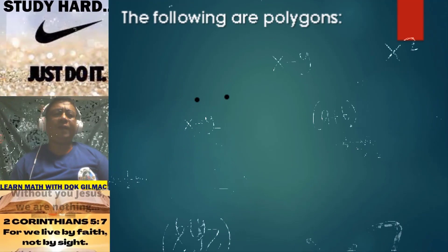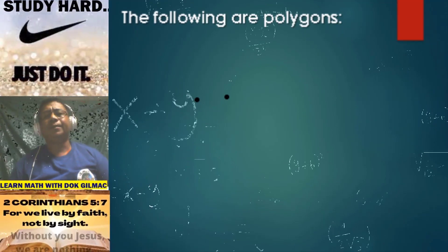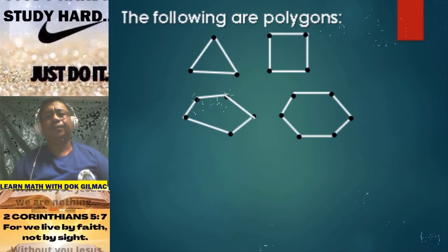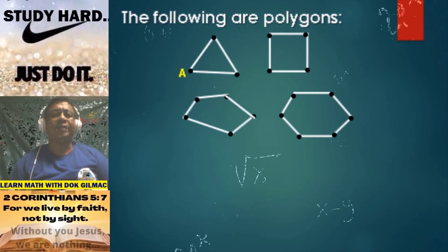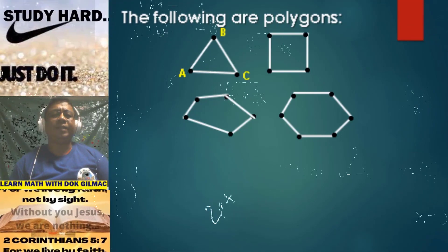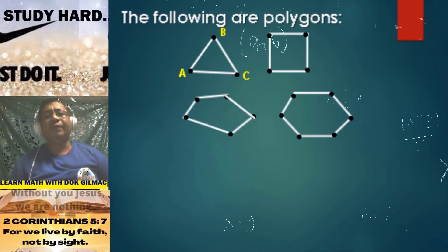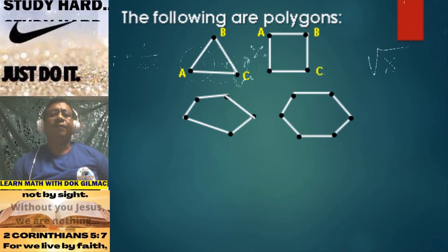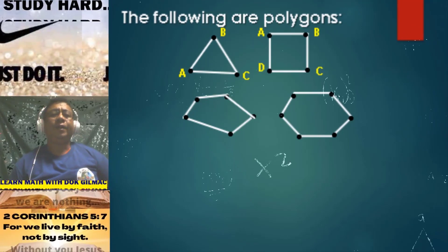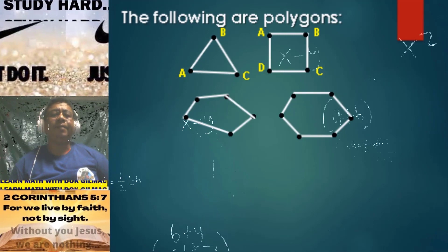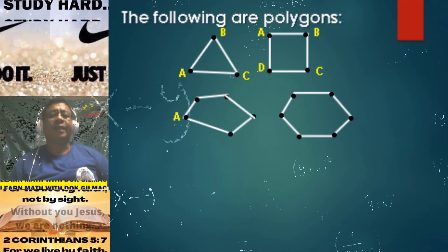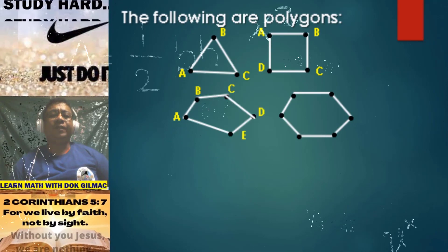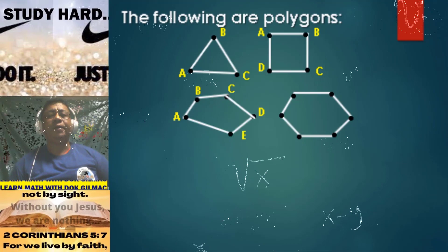Consider the following polygons. We have here vertex A, vertex B, and vertex C for the given triangle. Vertex A, vertex B, vertex C, vertex D for the given quadrilateral. Vertex A, vertex B, vertex C, vertex D, vertex E for the given pentagon.